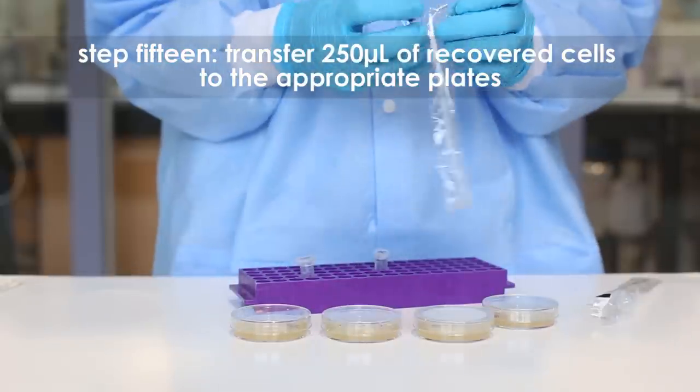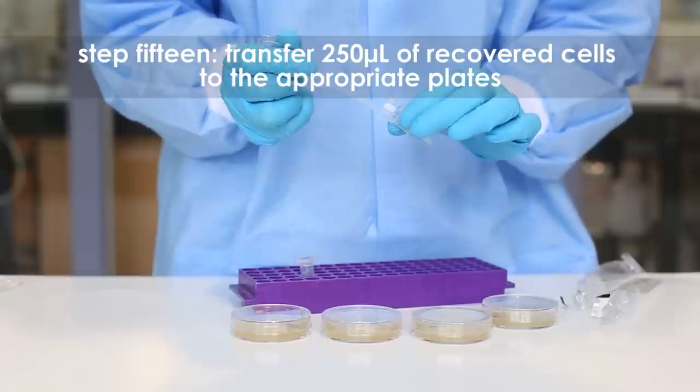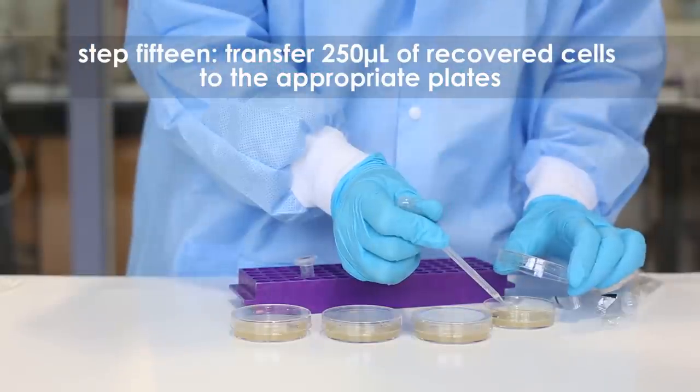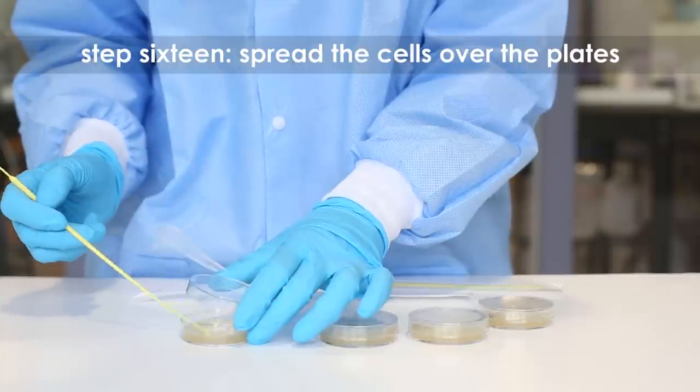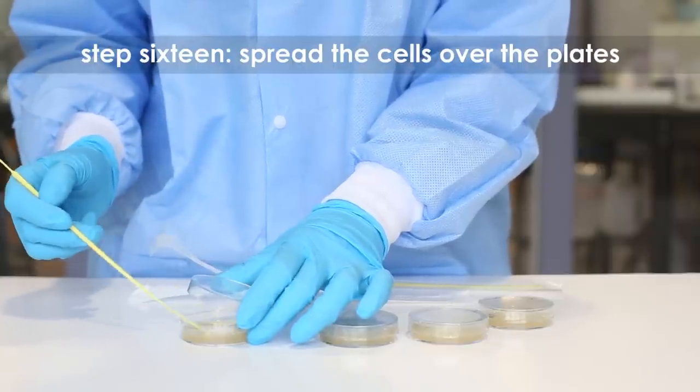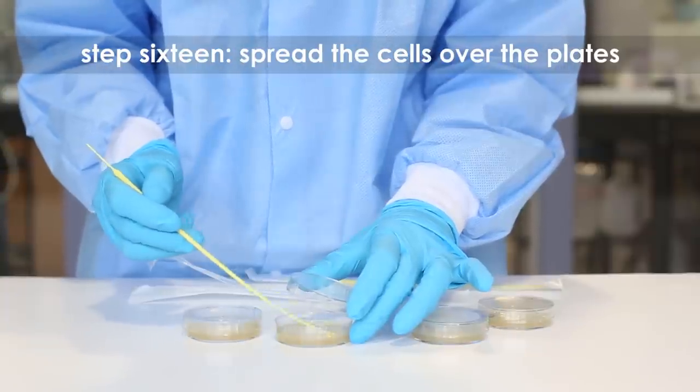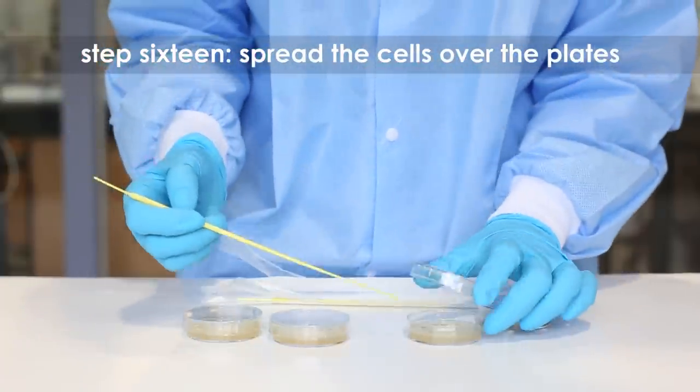Make sure to use different pipettes for the plus DNA and minus DNA samples. Step sixteen: spread the cells over the entire surface of the plate with a sterile inoculating loop. Cover the plates.